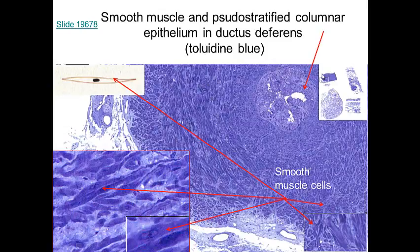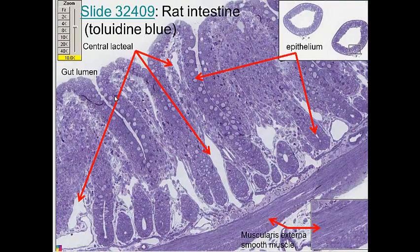Looking at the ductus deferens stained with toluidine blue, we see pseudostratified columnar epithelium lining the lumen, and all surrounding tissue is smooth muscle. We can see individual muscle fibers or cells with the nucleus in the center of each, and the tissue is non-striated.